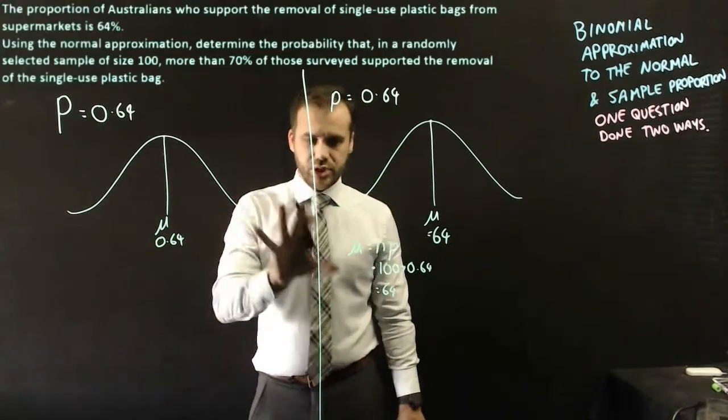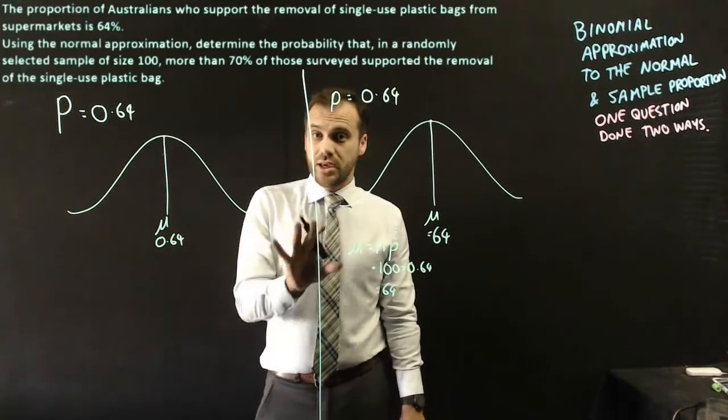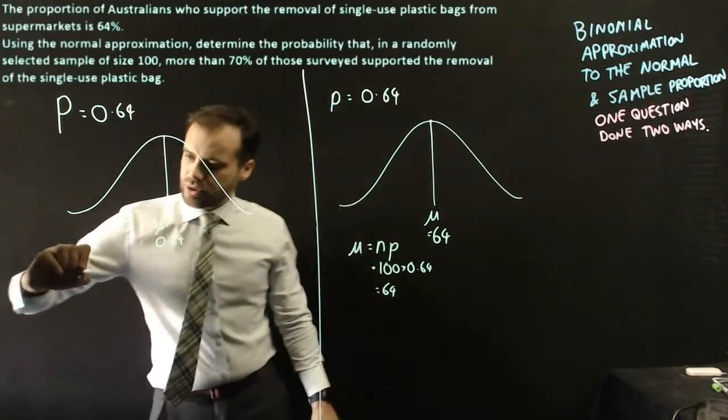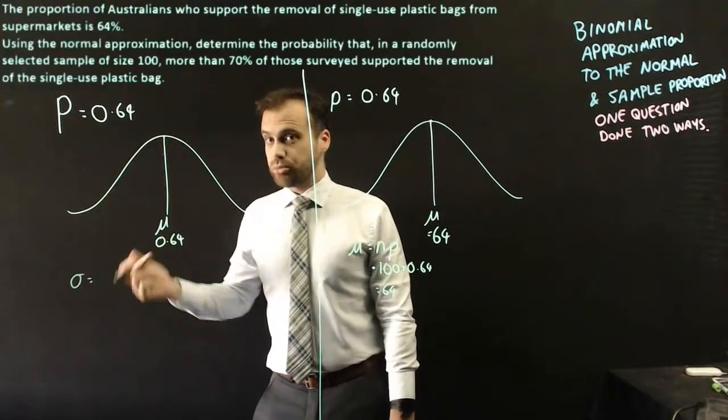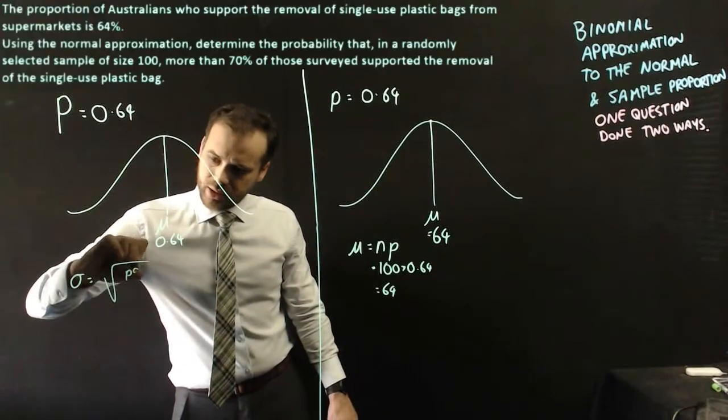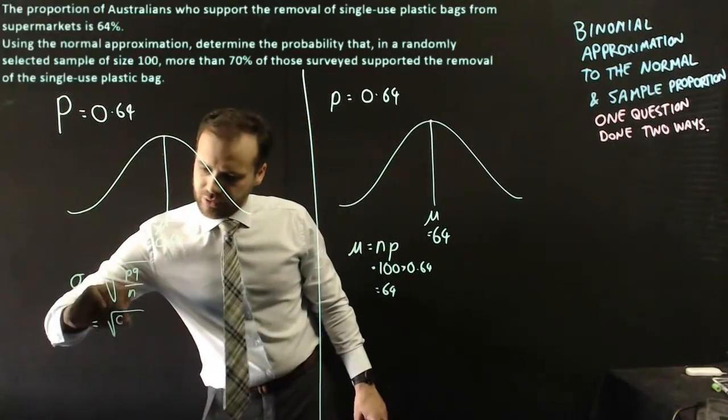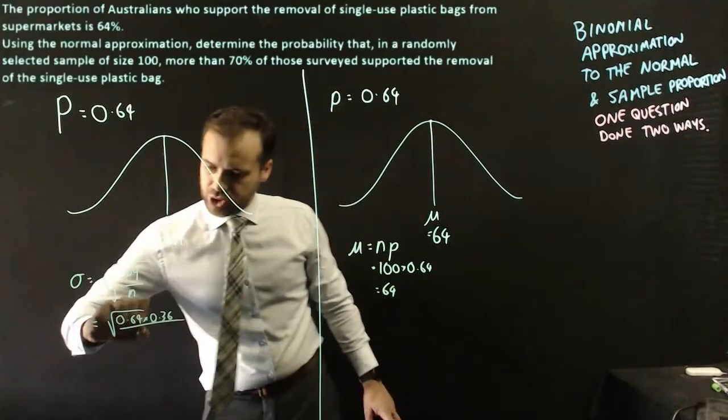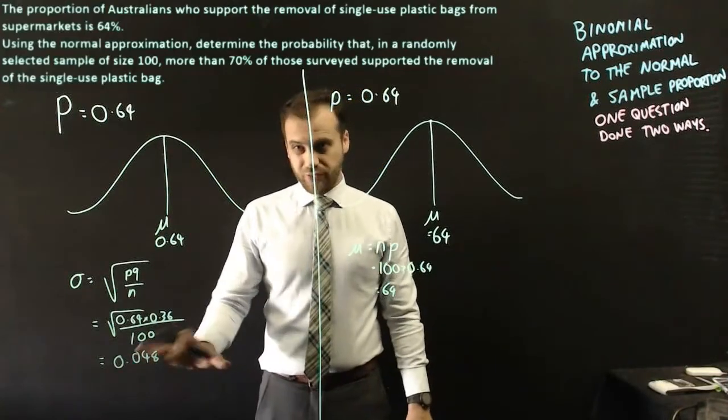Now when you're dealing with normal approximations, the mean is only half the story. You also need to know what the standard deviation is. My standard deviation here is going to be the standard deviation of a sample proportion. That's going to be the square root of pq over n. That's the square root of 0.64 times 0.36 divided by 100, which is 0.048.